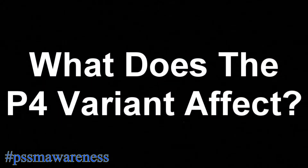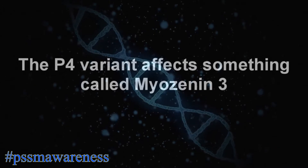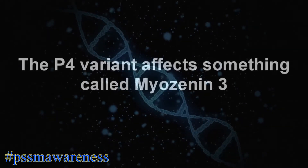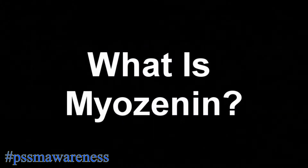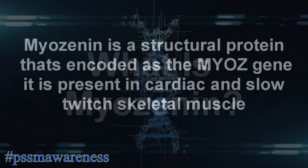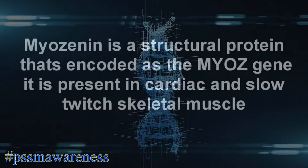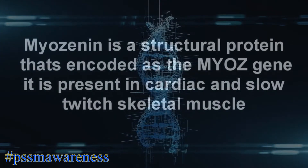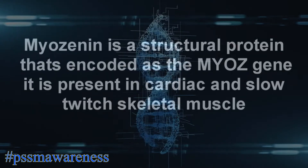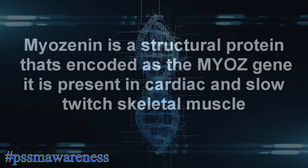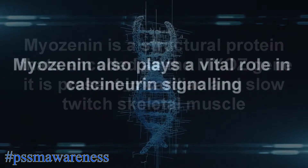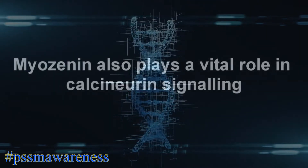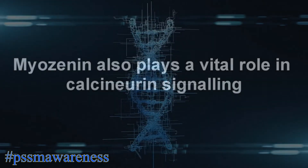What does the P4 variant affect? The P4 variant affects something called myozenin-3. Myozenin is a structural protein that's encoded as a myos gene. It is present in cardiac and slow twitch skeletal muscle. Myozenin also plays a vital role in calcineurin signalling.